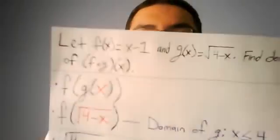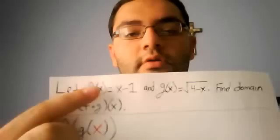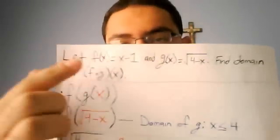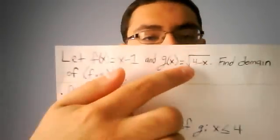Hi, my name is Alvin. I'm going to show you how to find the domain of a function. So we'll first start off with this example: f of x equals x minus 1, and g of x equaling the square root of 4 minus x.